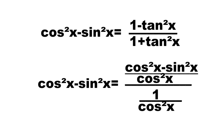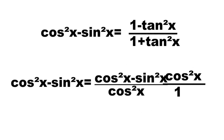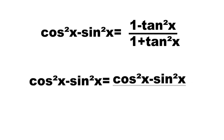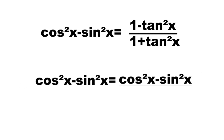By inverting the divisor and proceeding to multiplication, we have cosine squared x minus sine squared x over cosine squared x, times cosine squared x over 1. Cancel cosine squared x, so we have cosine squared x minus sine squared x is equal to cosine squared x minus sine squared x. This is the proof we are looking for.